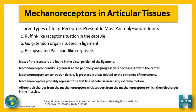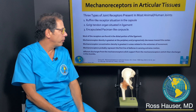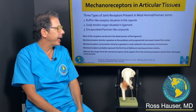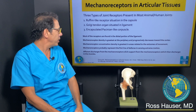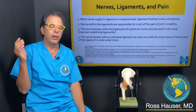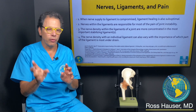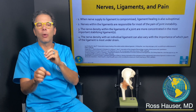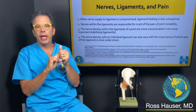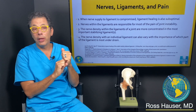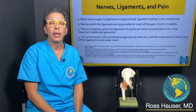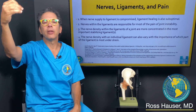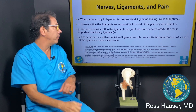The mechanoreceptor concentration density is greatest in the areas of the extremes of motion. Mechanoreceptors probably represent the first line of defense in sensing extreme motion. Afferent discharges from the mechanoreceptors elicit support which then discharge in the muscles — that's the ligament-muscular reflex. In summary, most of the nerves in the ligaments are where the ligaments attach to the bone, and they fire when there's too much force to protect from ligament damage and joint dislocation.